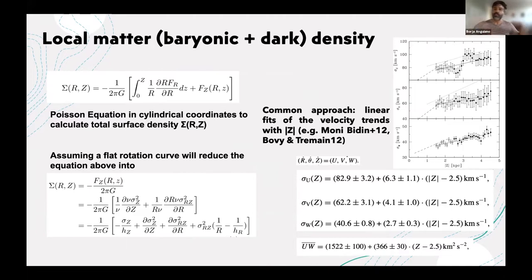We assume a flat rotation curve. Maybe for the local galaxy, if we are concentrating in the solar radius, this is going to be valid. If we start to move a little bit outside, we start to see this beautiful velocity rotation curve. Maybe a flat assumption is valid for the solar radius.